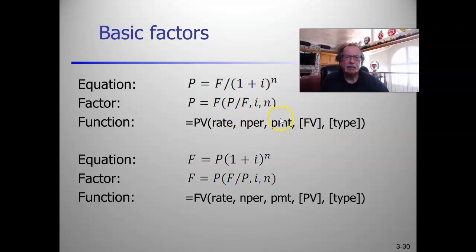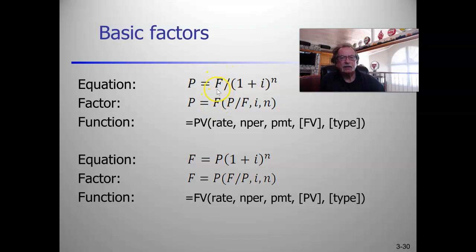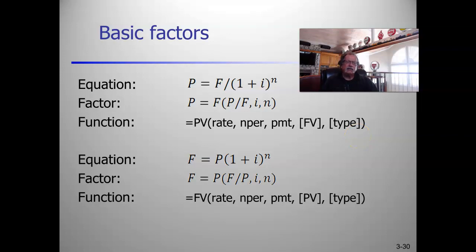We're going to put zero in for the payment for now — a payment would be an interim payment, which I'll cover later. The 'type' argument: if you leave it blank, Excel infers zero. Zero means cash flows are at the end of the period; one means cash flows are at the beginning. For all practical purposes, we will be doing end-of-period calculations, which is what you will typically always do in industry.